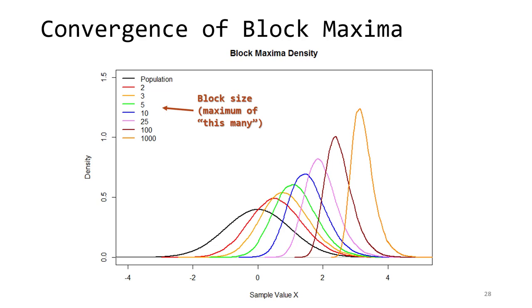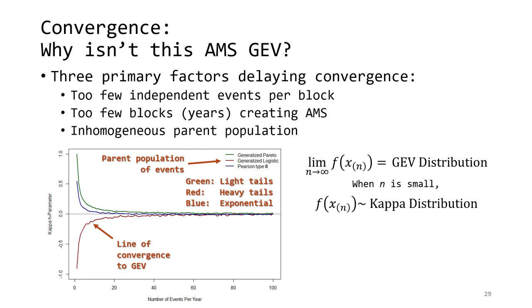This figure shows the effect of the number of events per block. The parent population, a standard normal distribution, is shown in black. If I take repeated samples of size 2 and keep the larger of those two observations, the distribution of that larger value looks like the red curve just to the right of the black one. Repeating this for the largest of samples of 3, 5, 10, and so on, the curves move to the right and get progressively more peaked, culminating in the maximum of 1,000 samples in the orange curve. This shows that the average value of the maxima grows with the number of events per year, and that variability actually decreases — the peak of the density is much taller as the number of events per block increases.